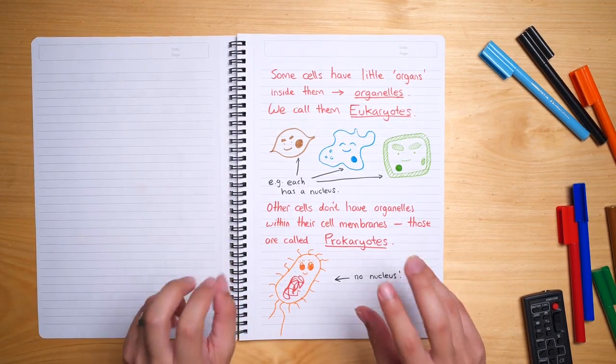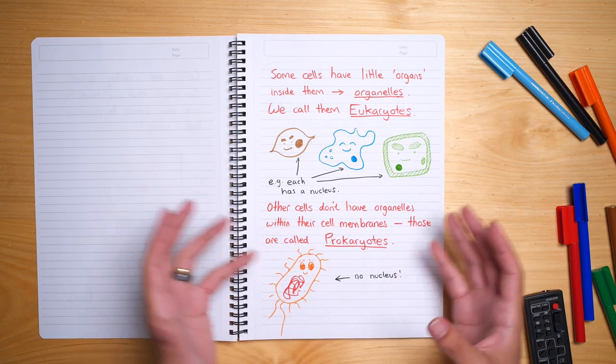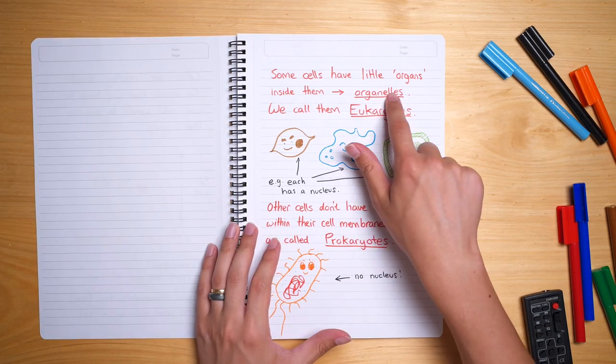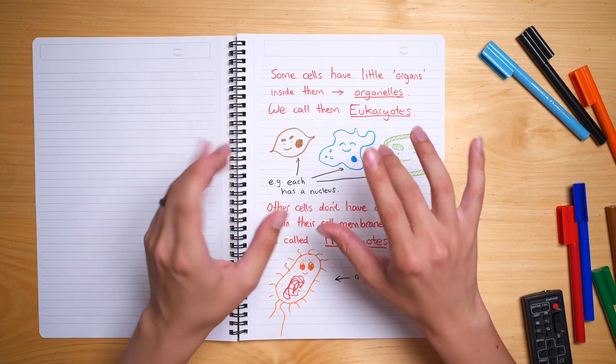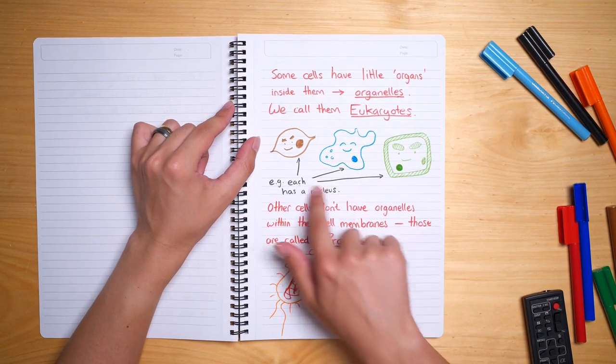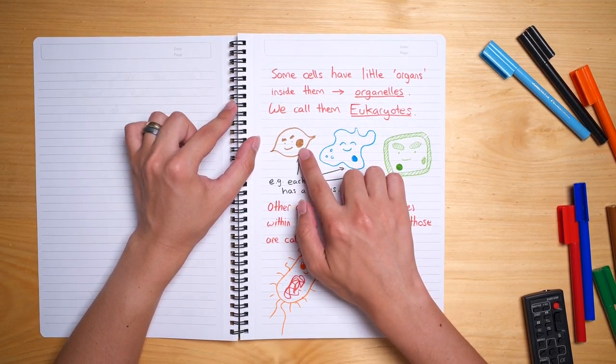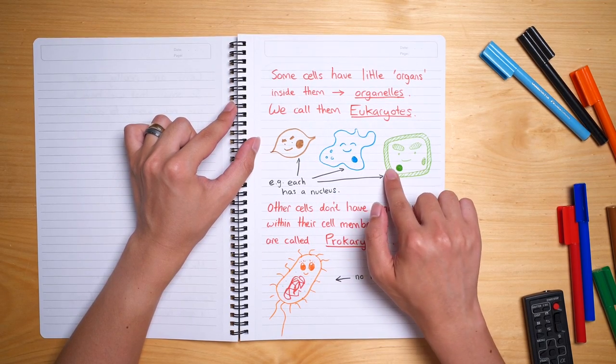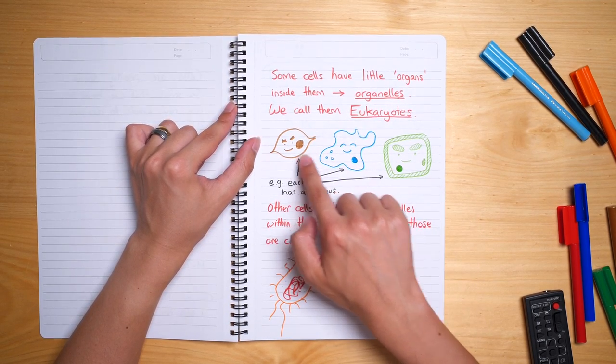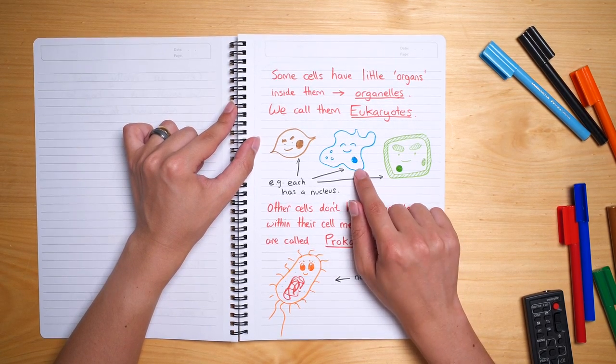Some cells have little organs inside of them and we call those little organs organelles. I suppose that their name kind of reflects this idea that they're little. They're really tiny. I've drawn a bunch of cells here that have a nucleus in each one of them. You can see there's all the beauty spots that I have drawn earlier. Those are a nucleus. Each one of them has a little nucleus inside. That's what I was trying to indicate with these little spots.